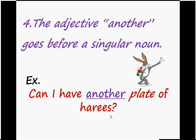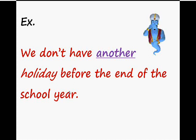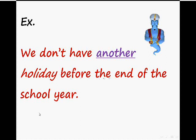Another example: 'We don't have another holiday before the end of the school year.' This is relevant to our term — all our holidays are finished. Here, another is the adjective and what came after it is the word holiday, which is a singular noun. So: we don't have another holiday before the end of the school year.